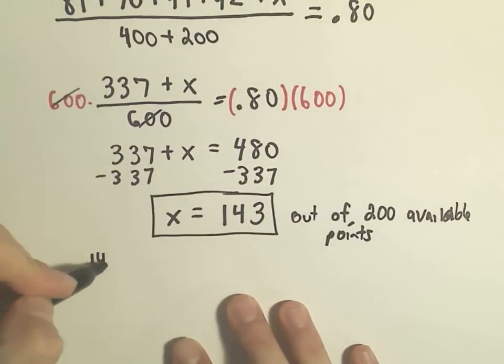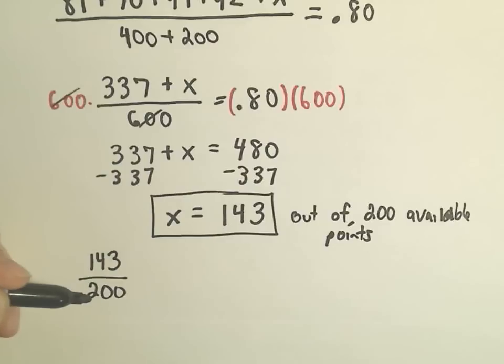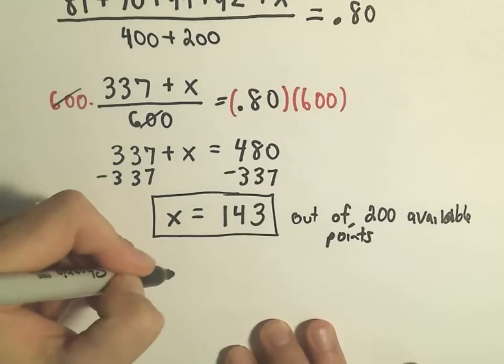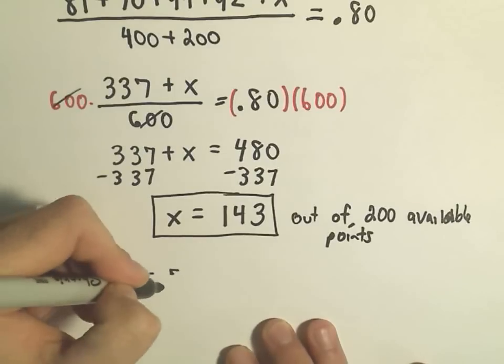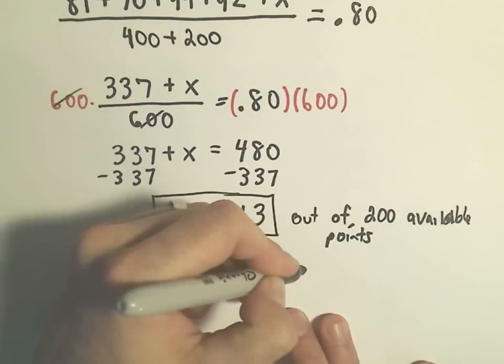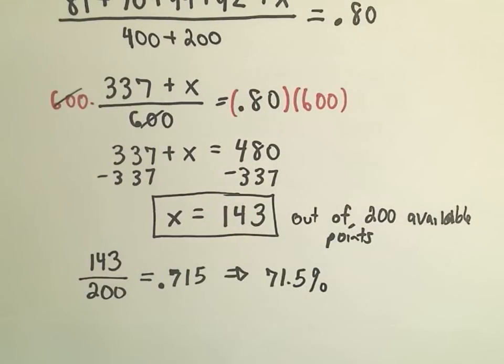So what does that mean as a percentage? Well, again, we need to get at least a 143 out of 200. So 143 divided by 200, you've got to make at least .715, which would be a 71.5%.